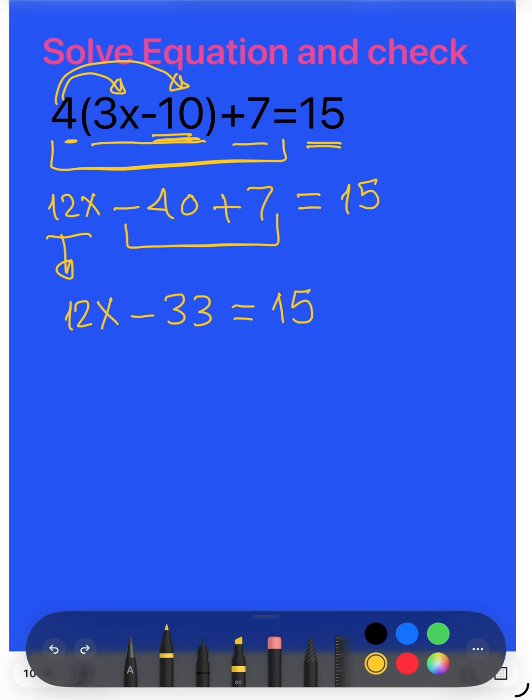Now we have equation. Solve the equation. I try to cancel negative 33, add 33 to both sides. I cancel. Then we have 12x equals 15 plus 33, then 12x equals 48.